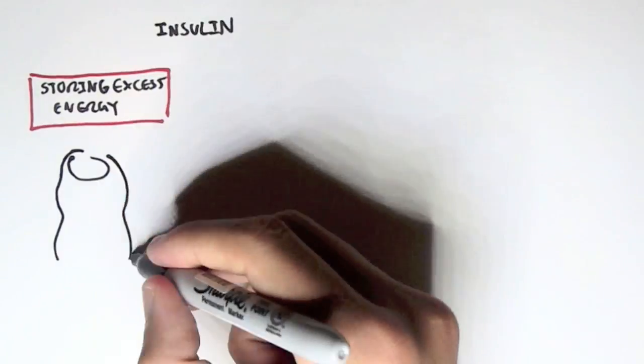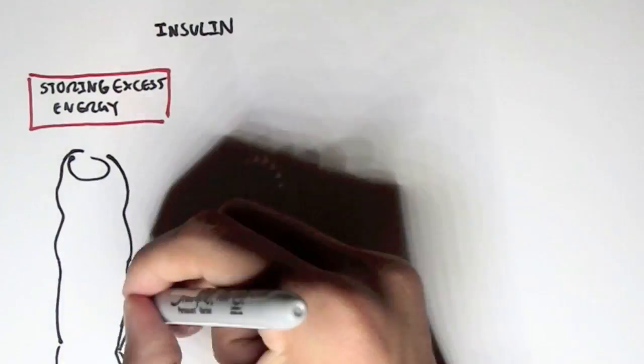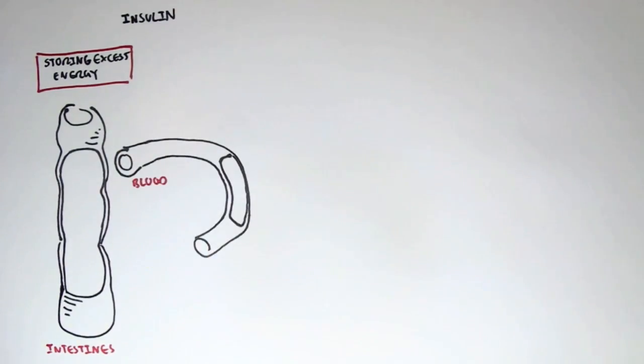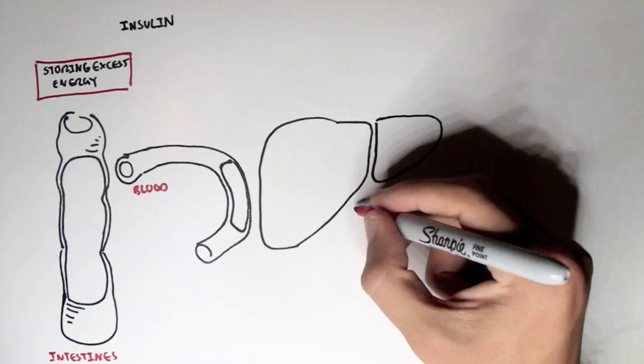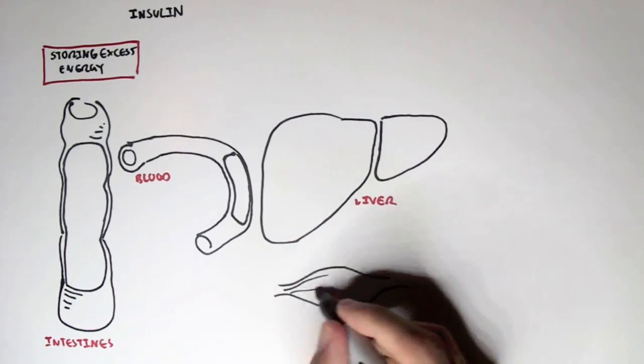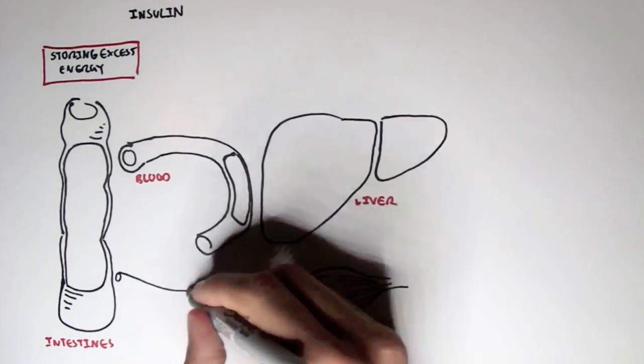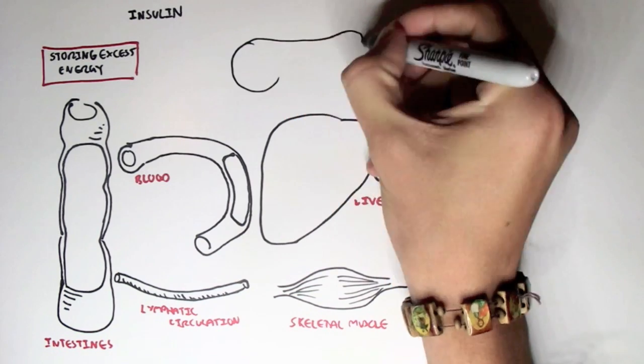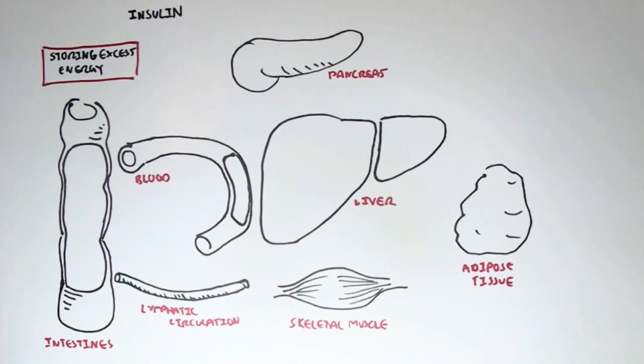I would like to show you the associated organs that insulin has an effect on. Here we have the intestines, here we have the blood, here we have the liver, skeletal muscle, lymphatic circulation, adipose tissue, and finally the pancreas.